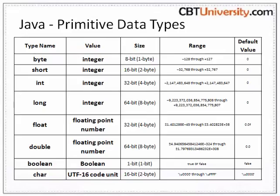These are the Java primitive data types. A primitive type is predefined by the language and it is a reserved keyword. There are 8 primitive data types supported by the Java language.